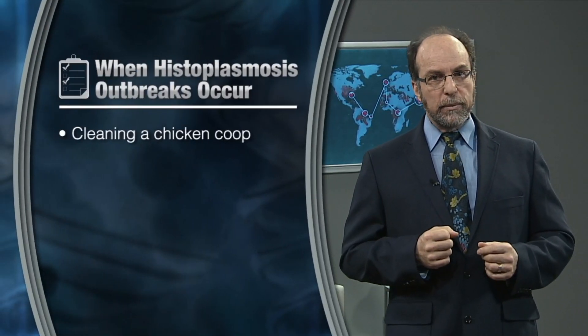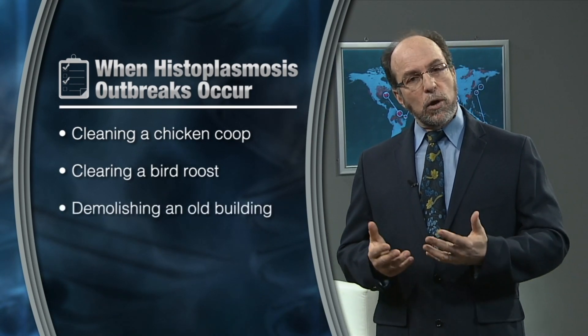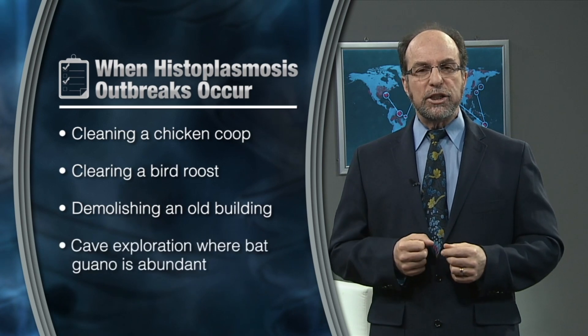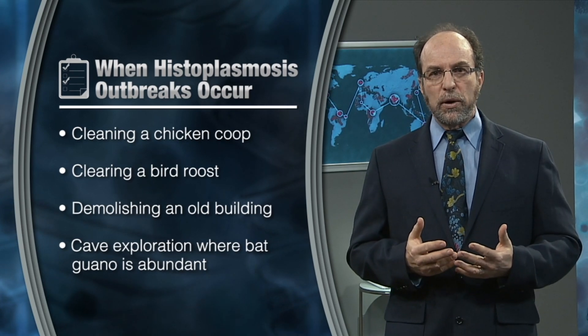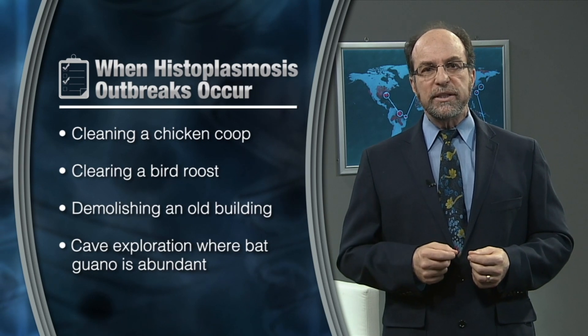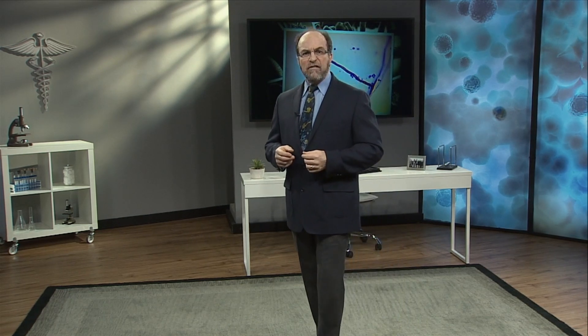Histoplasmosis outbreaks are otherwise notorious for occurring after other common exposures, such as cleaning a chicken coop, clearing a bird roost, demolishing an old building, or cave exploration where bat guano is abundant. The mold especially likes to live in the soil where bird or bat droppings provide extra nutrients to support its growth. One of the bigger lessons learned from the Indianapolis outbreak was the capacity to inflict a large incidence of disease in a major metropolitan area — a harbinger of our concerns of bioterrorism.